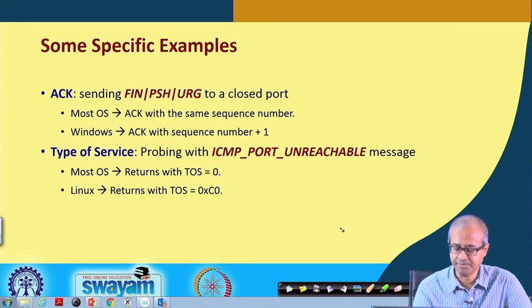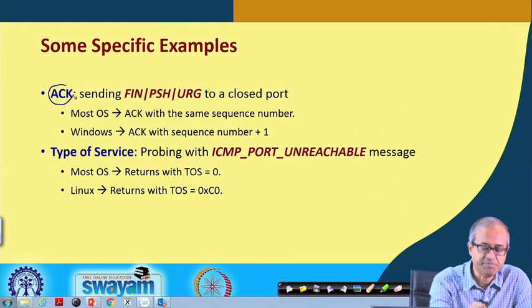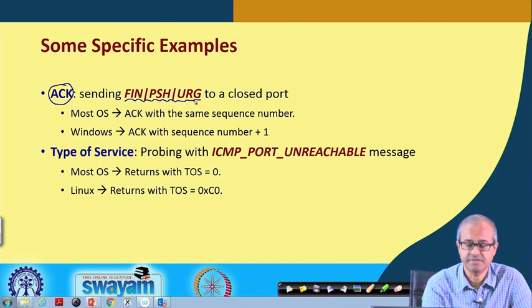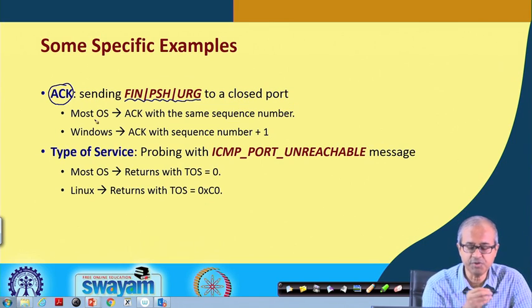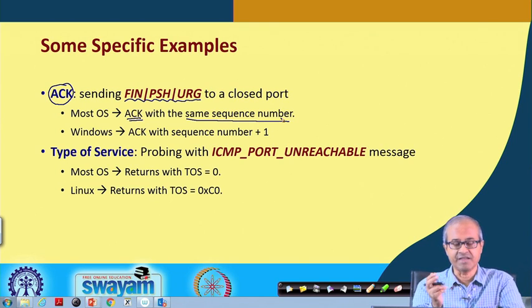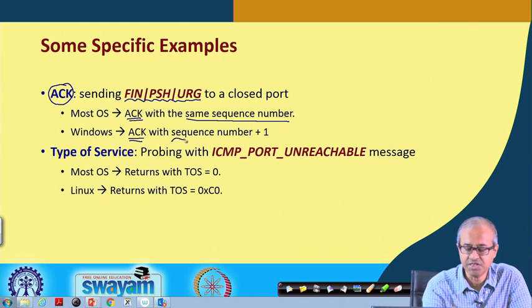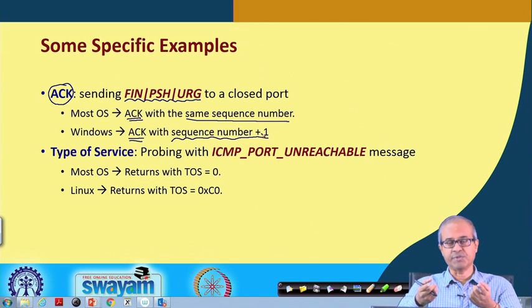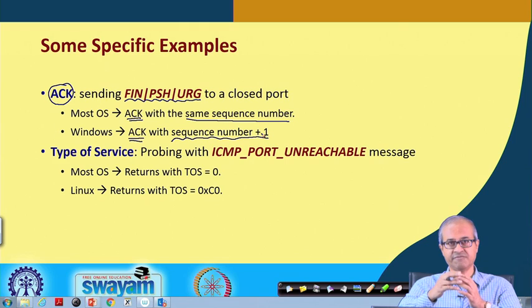A specific example with TCP: if you send FIN, PSH, and URG flags all set to a closed port, most operating systems will send back an ACK packet with the same sequence number. However, Windows handles it slightly differently — it sends back an ACK but increments the sequence number by one. So if the sequence number coming back is the same, it is a non-Windows OS; if incremented by one, the host is running some version of Windows.